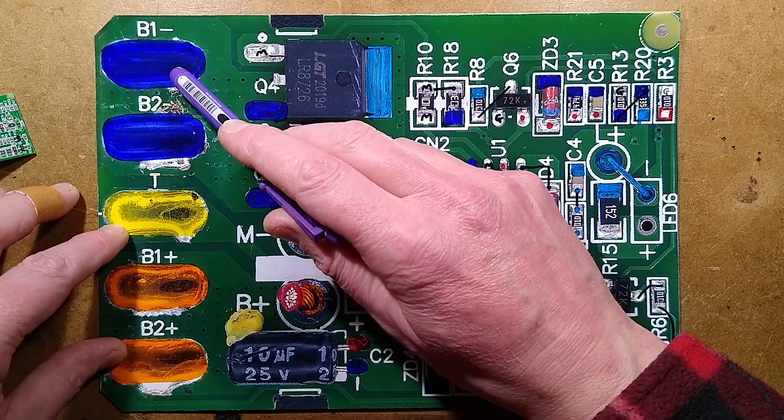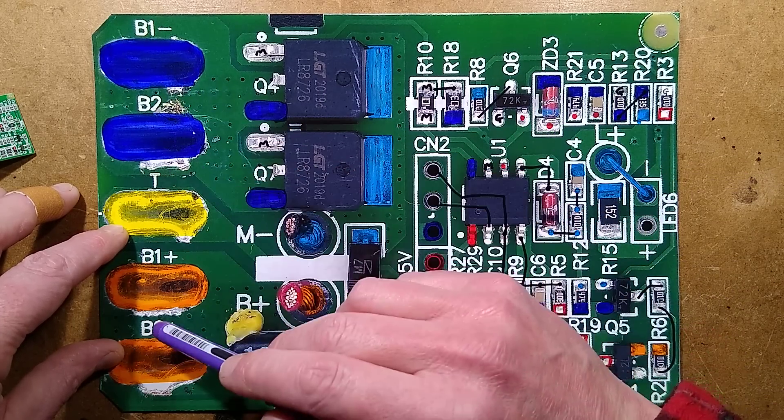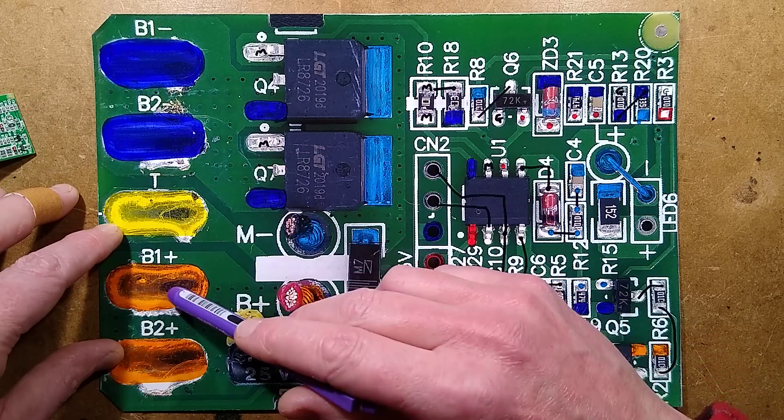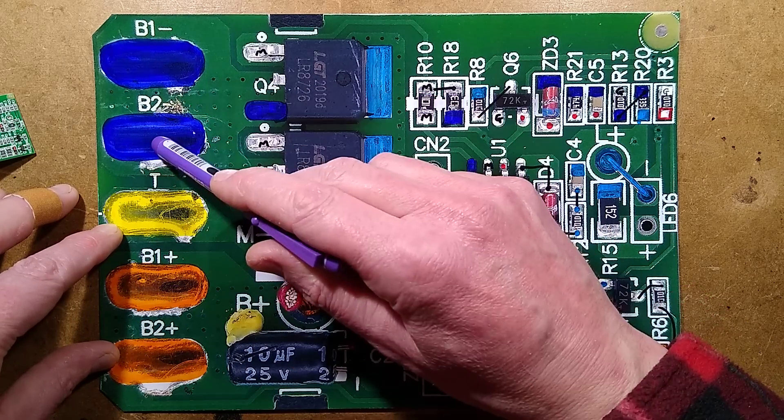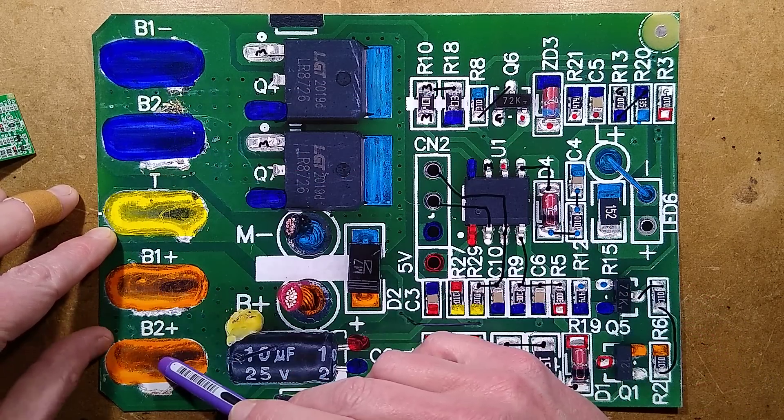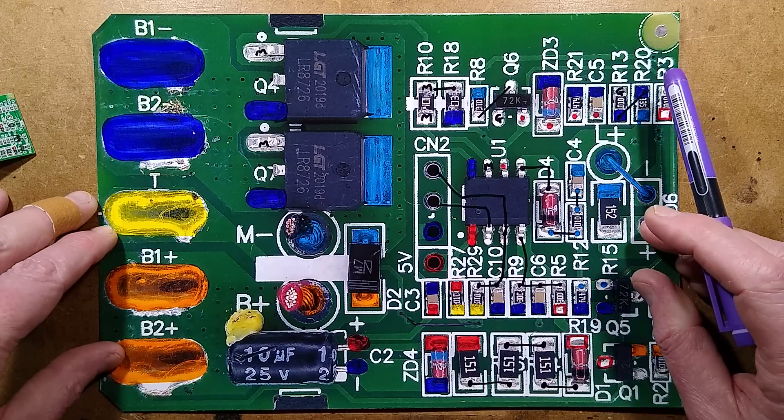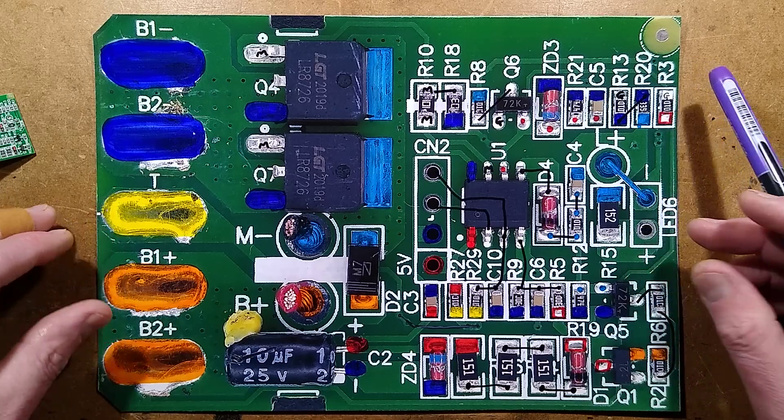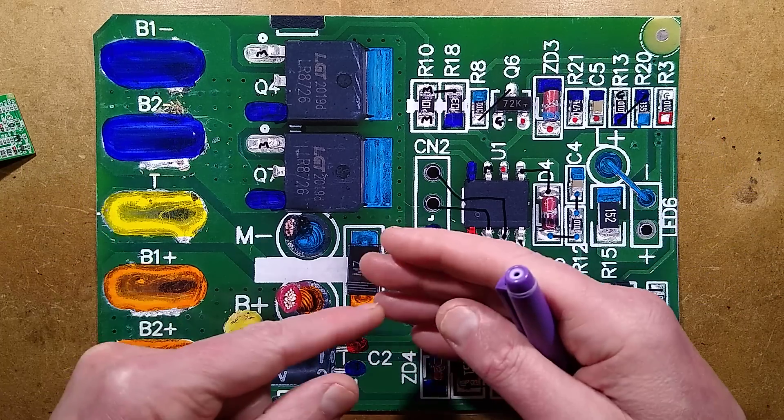This is the 20/40 volt battery system. In this case, because it's a 20 volt tool, they've literally just banged the two negatives together of the batteries and the two positives, so they're in parallel. That's quite unexpected, but it's reasonable enough.